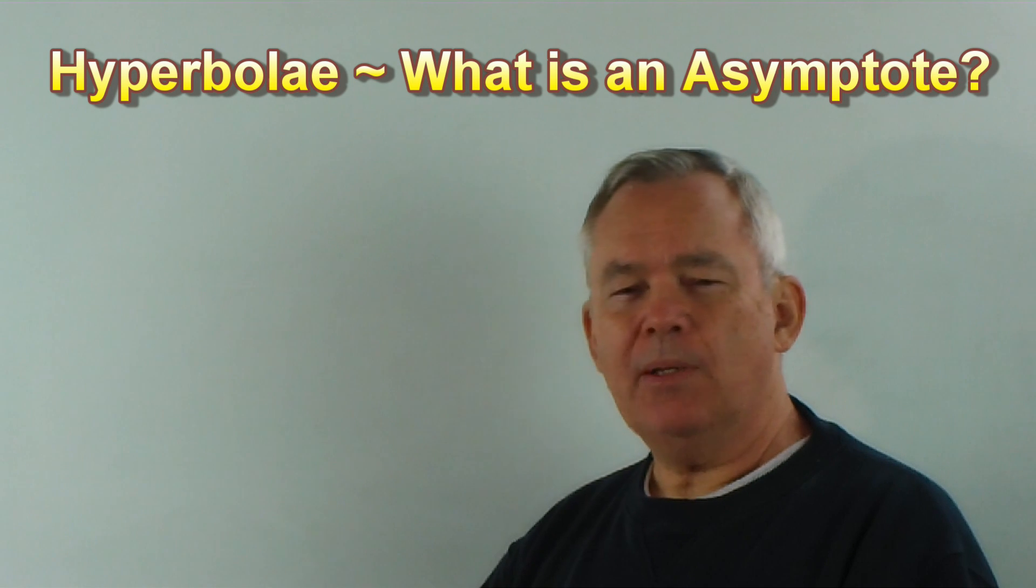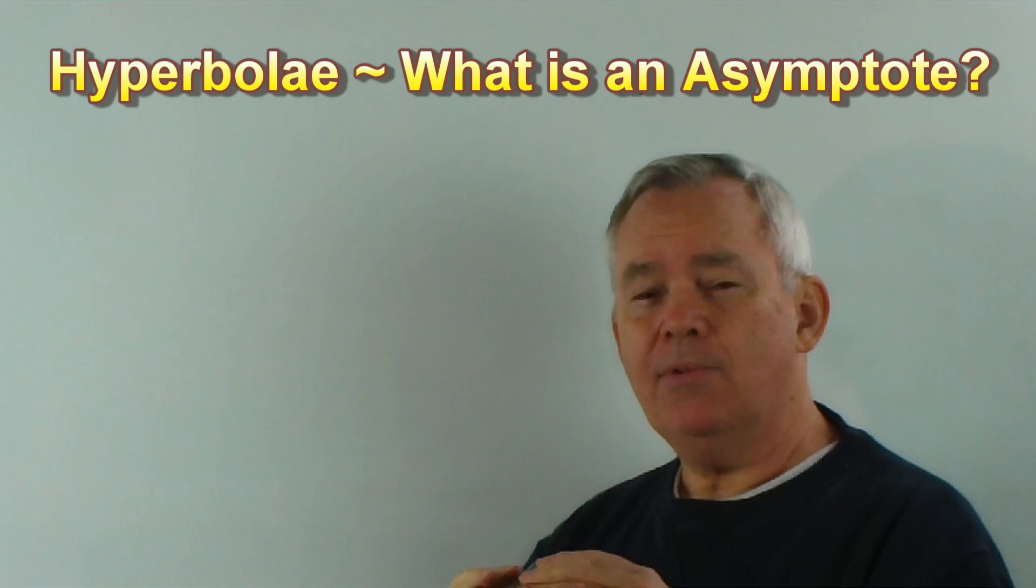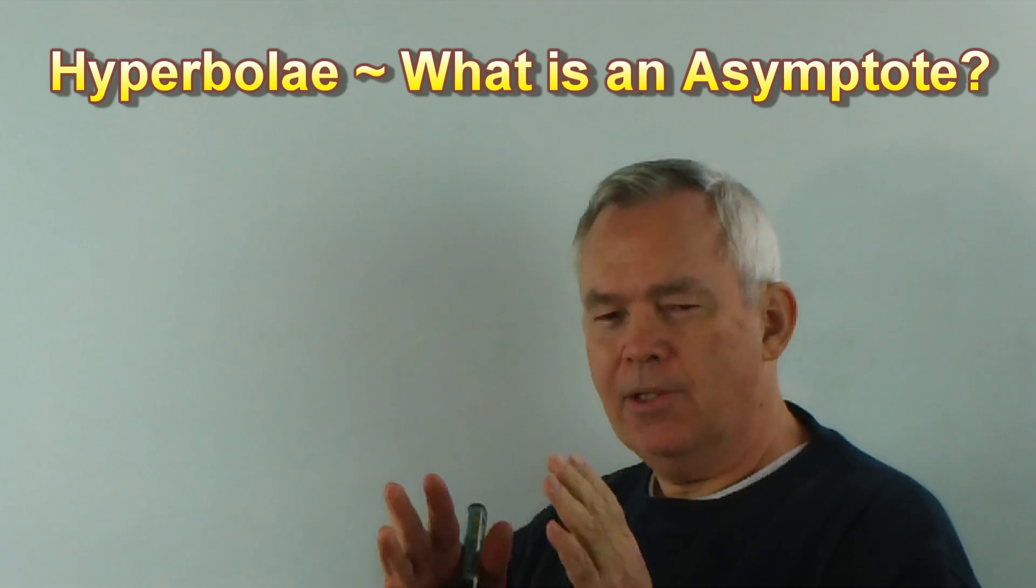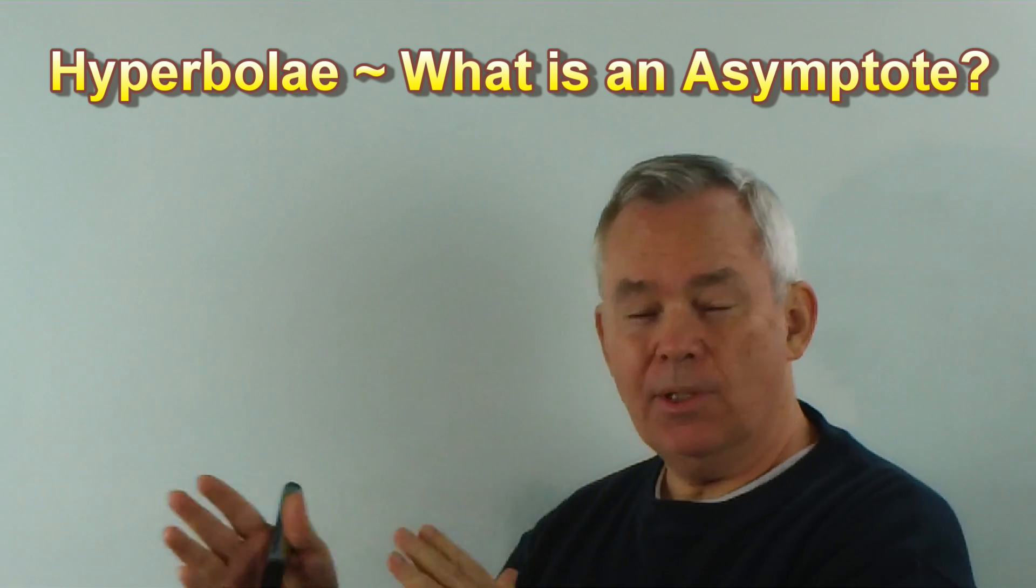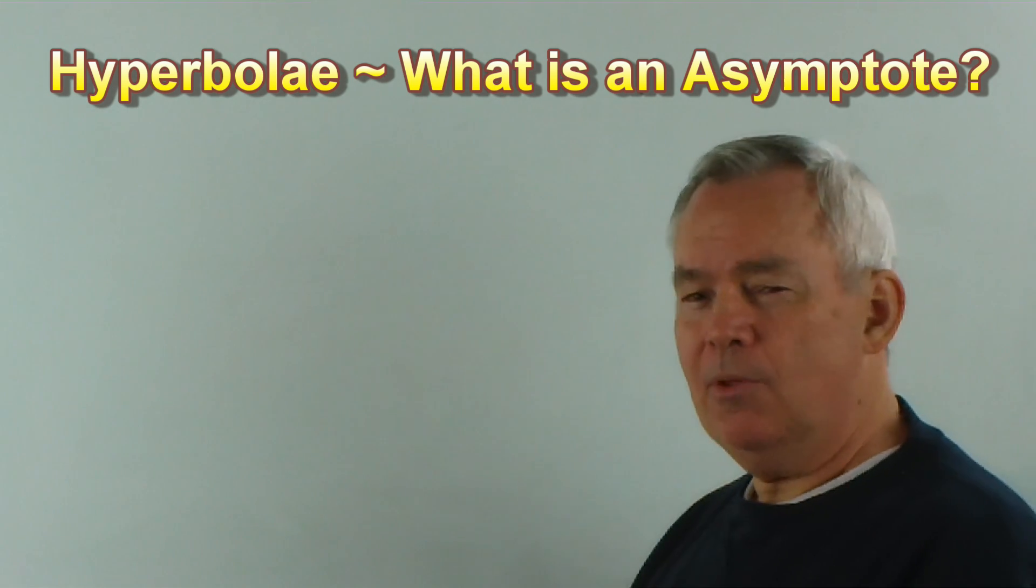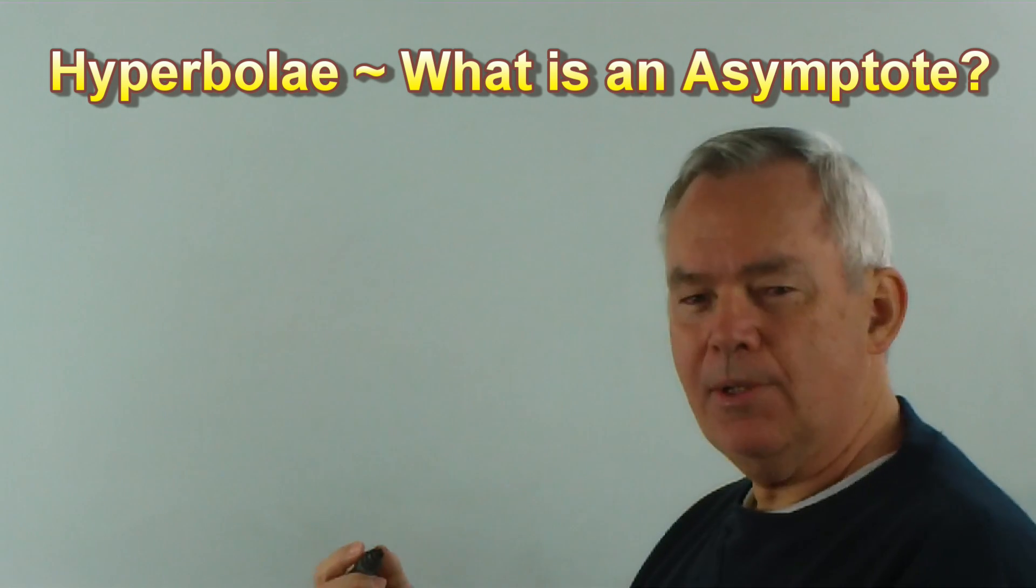In this first video, I'm going to explain what an asymptote is and how it behaves thinking in terms of fractions. In subsequent videos, I'll talk about how to find asymptotes in different locations and how to have multiple asymptotes and so on. But first of all, let's look at what an asymptote is.